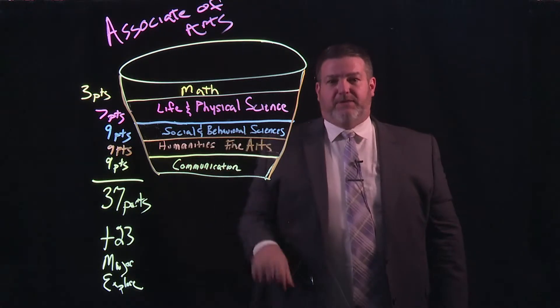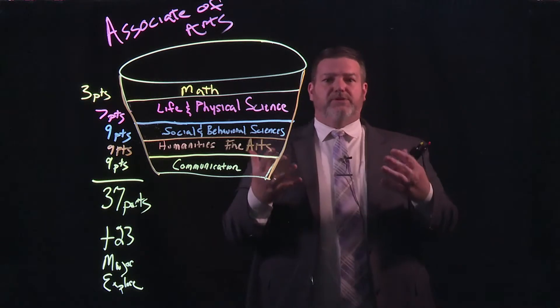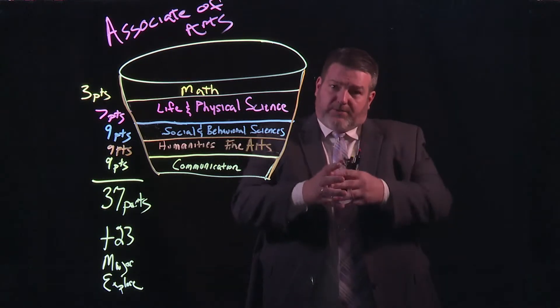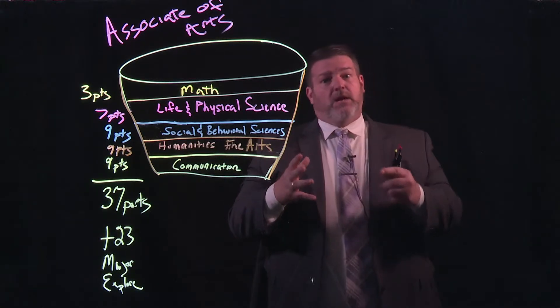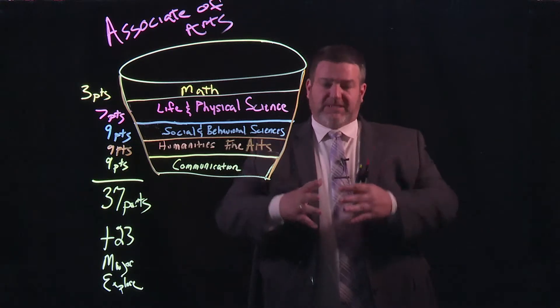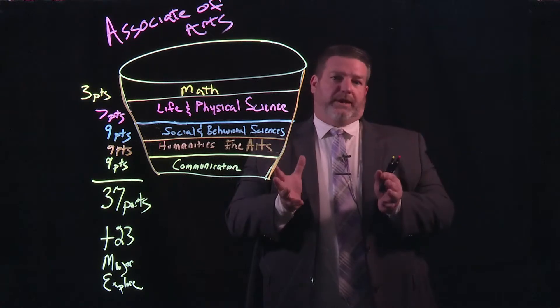Before we dig into the recipe for an Associate of Arts degree, let's talk about how an Associate's degree was originally thought of within a four-year college degree. So high school does a great job of building upon the breadth of knowledge and lots of different subject matters. Your first two years of college typically does that same thing, so you expand knowledge in lots of different subject matters, and you gain a more worldly understanding.